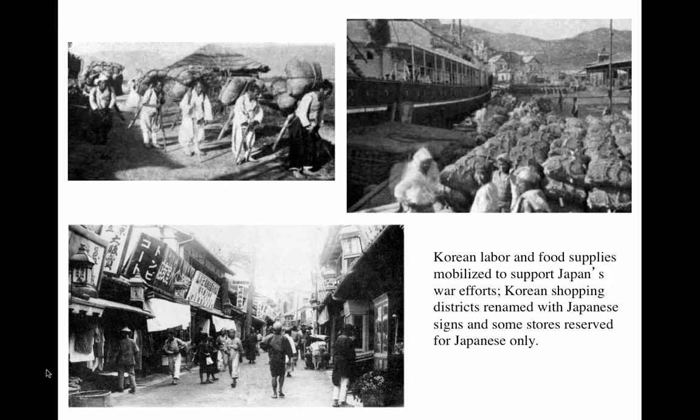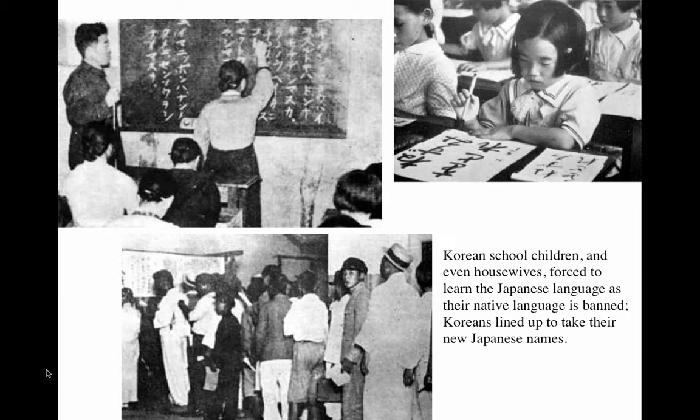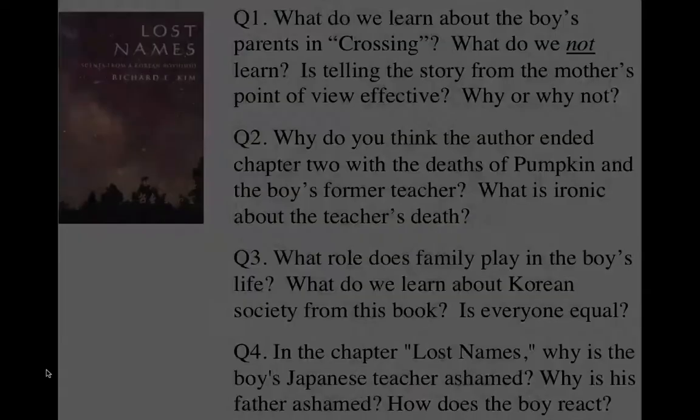By the 1930s, Korea had modernized in many ways — improvements in the education system, infrastructure, and agricultural techniques. But these things came at a price: Korea's economy was very much designed to support Japan. Images show Korean agricultural workers and foodstuffs being mobilized to support the Japanese war effort, and storefronts in Korean towns with signs converted into Japanese. During the assimilation period, Koreans were forced to use only Japanese in school and even to take Japanese names, giving up their traditional names — which leads in part to the title of the novel we will be reading. Many of these policies could be described as an attempt at cultural genocide, making Koreans into good Japanese subjects.